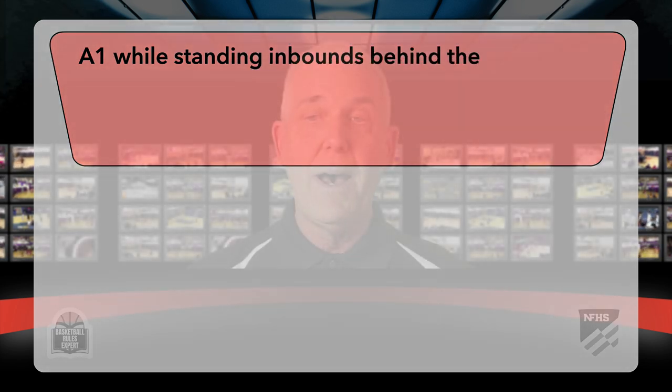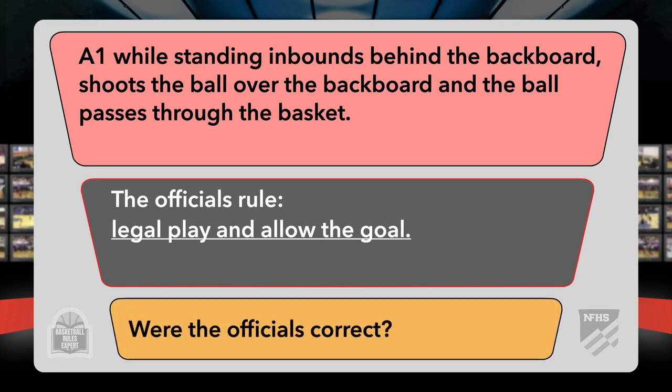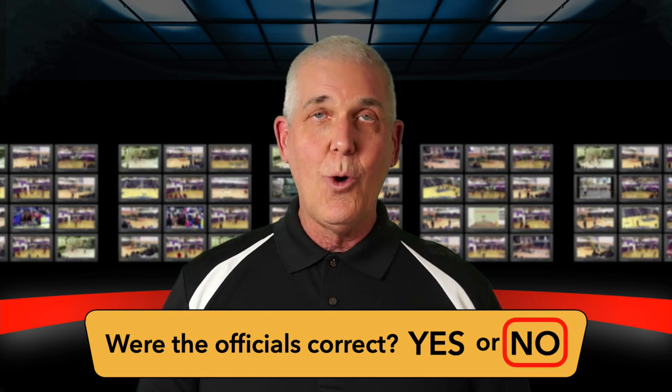A1, while standing inbounds behind the backboard, shoots the ball over the backboard, and the ball passes through the basket. The officials rule this an illegal play and allow the goal. Were the officials correct? In National Federation of High School rules, if we're dealing with a rectangular backboard, the ball cannot pass over the backboard legally. By rule, this is an illegal play — an out-of-bounds violation should have been ruled. The existence of other rule sets: we see a highlight from an NBA game where they allow the goal, but in National Federation rules this is illegal, it is a violation, and the goal should not be scored. Were the officials correct? No. No, they were not.